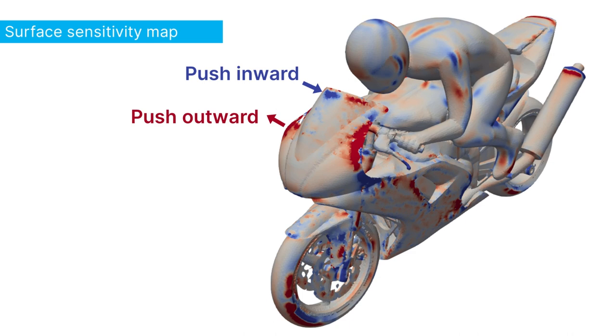This map will tell you on the entire surface of the object where to locally push it inward or outward to improve your objective function. Now, as you can imagine, if you have to obtain the local gradients by rerunning an entire aerodynamic simulation for each node — which means thousands of simulations — this quickly becomes prohibitively expensive.